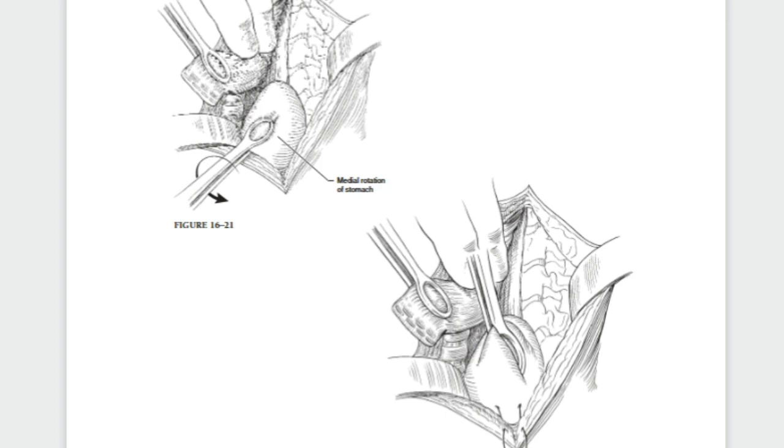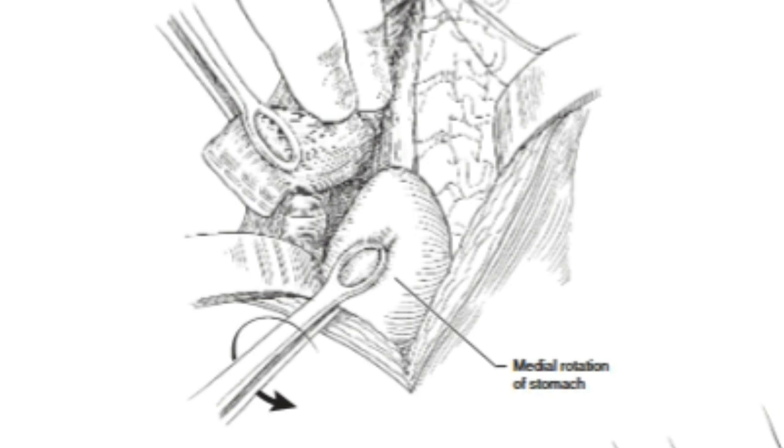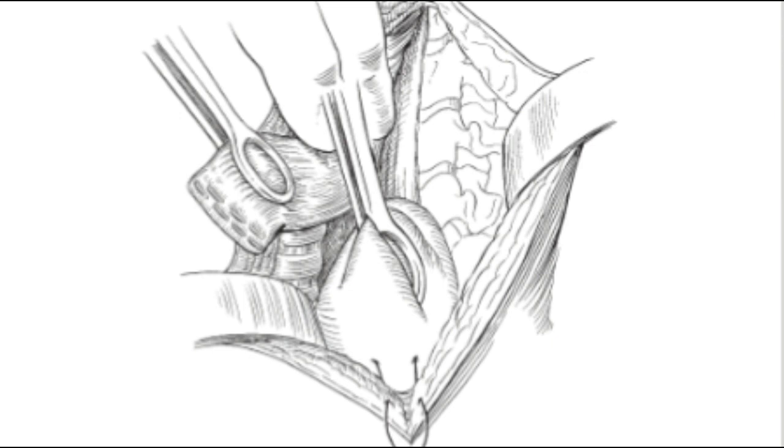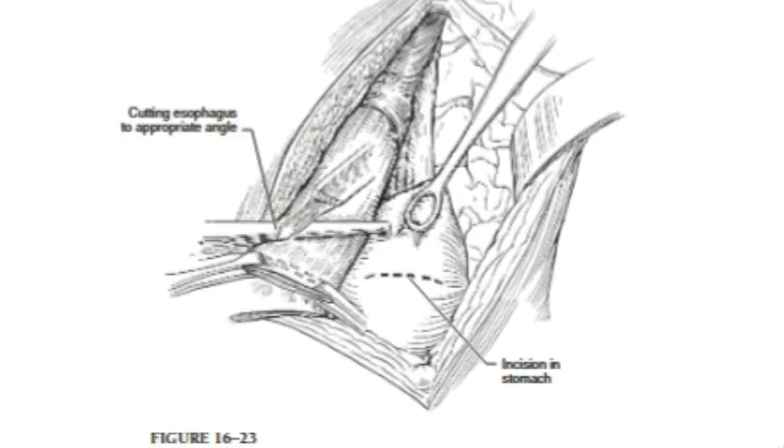Many techniques have been described to complete the cervical esophagogastric anastomosis. Stapled anastomoses have shown a lower incidence of anastomotic leak over hand-sewn anastomoses. Once an adequate length of stomach, four to five centimeters, has been mobilized above the clavicles, the suture line from the lesser curve is oriented toward the patient's right and a traction suture is placed on the anterior wall of the stomach at the lower aspect of the neck wound. Figures 16-21 and 16-22. A 1.0 to 1.5 centimeter gastrotomy is performed on the anterior gastric wall three to four centimeters distal to the tip of the fundus lying high in the neck.